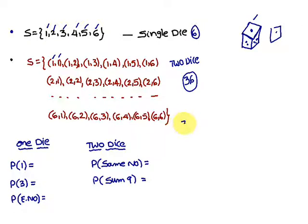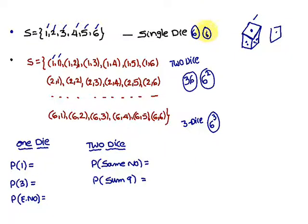From this you can conclude that if you roll three dice, how many elements exist in the sample space? You come across with six-cubed elements in the sample space. If two dice, you are going to get six-squared elements. If one die, you are going to get six-to-the-power-one elements. So if a single die is rolled, six-to-the-power-one elements exist; if two dice are rolled, six-squared elements exist; if three dice are rolled, six-cubed elements exist in the sample space.